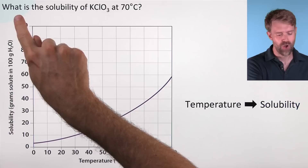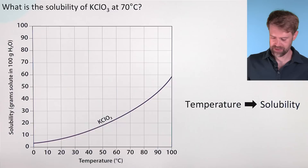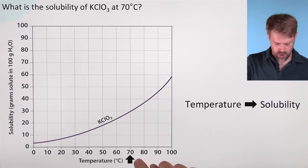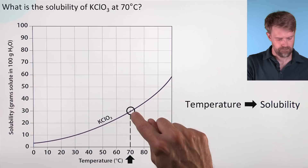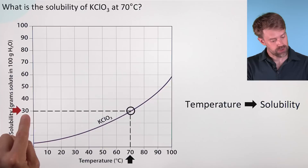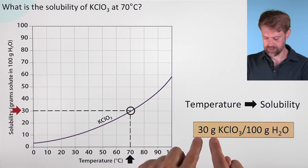Here's an example. What's the solubility of KClO3 at 70 degrees Celsius? It gives us a temperature, and we want to know the solubility at that temperature. We find 70 degrees on the x-axis, go up to the solubility curve, and then go across and look at the y-value for solubility. We find the y-value where it intersects, and here that looks pretty much like 30. So the solubility at 70 degrees is 30 grams of KClO3 per 100 grams of water.